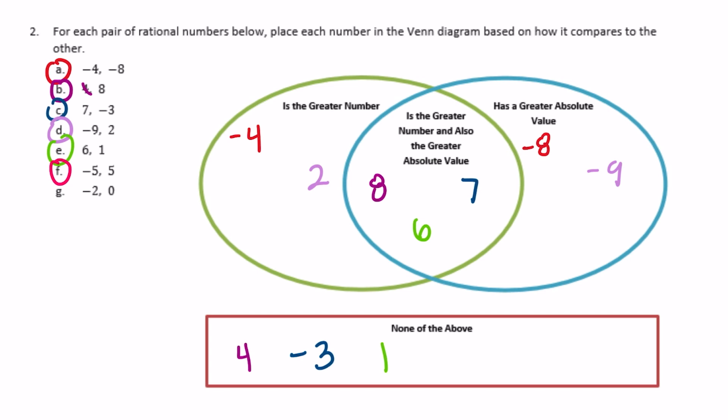Negative 5 and 5. The greater number is 5. Which has the greater absolute value — negative 5 or 5? Well, they are the same. The absolute value of negative 5 is 5, and the absolute value of 5 is 5. So it can't go in the 'greater number' section and it can't go in the 'greater absolute value' section, so I'm going to put it down here.